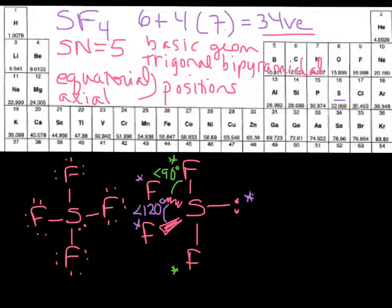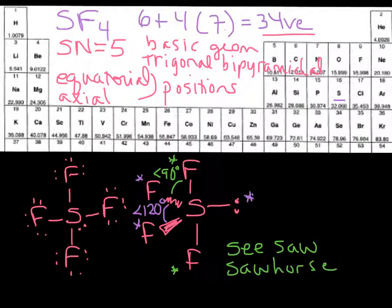So the last thing we have left to do with this shape is to name it. And so the name of this shape is what? You can either call it the Seesaw, the Sawhorse, I've seen Teeter Totter. So there's various names for this shape, this molecular shape.